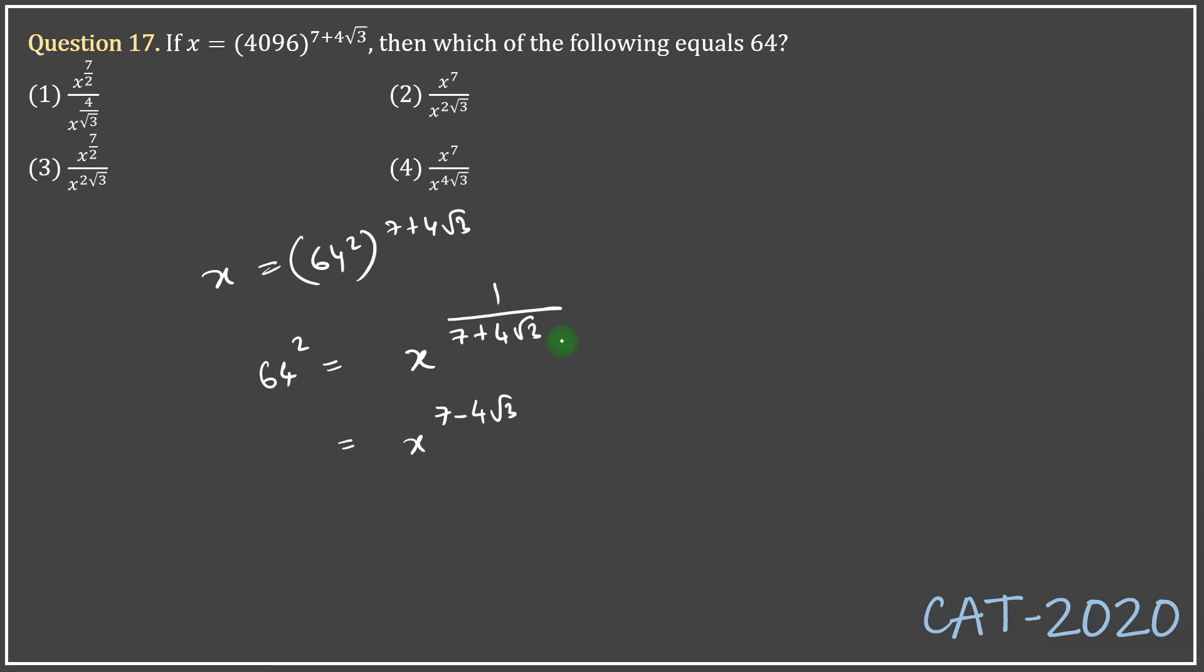The denominator will become 49 minus 48, which is 1. So you get 64 square, which means 64 equals x to the power 7 by 2 minus 4 root 3 by 2, that is 2 root 3, or x to the power 7 by 2 over x to the power 2 root 3.